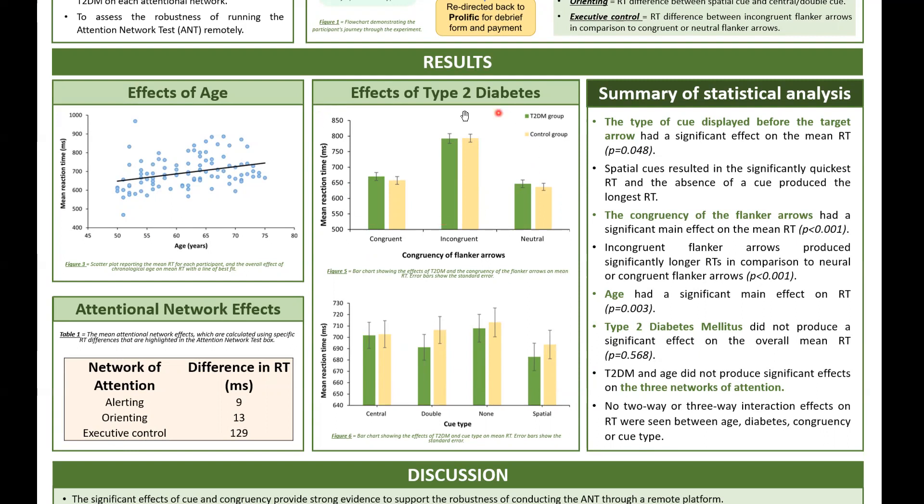These graphs also highlight the type of cue that was used and the congruency of flanker arrows. Both of these had a largely significant effect on the overall response times. In essence, this provides strong evidence for the remote feasibility of the attention network test, which is a really positive finding for psychological practice moving forward.